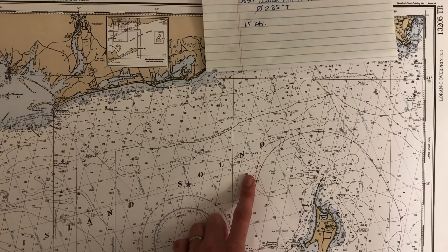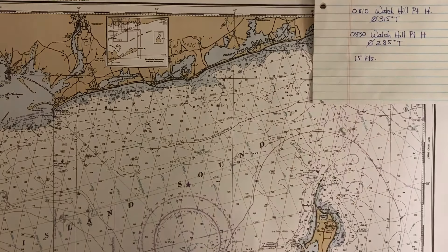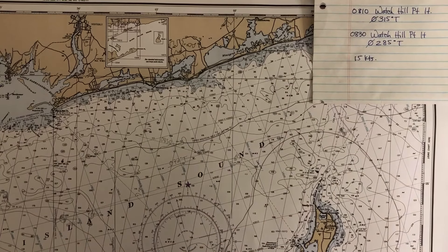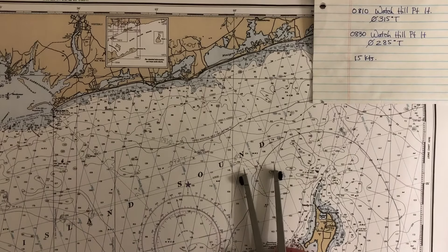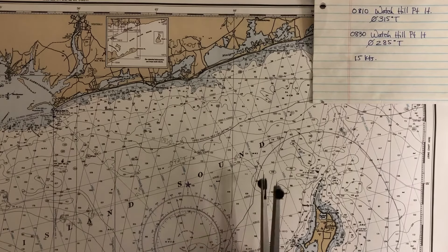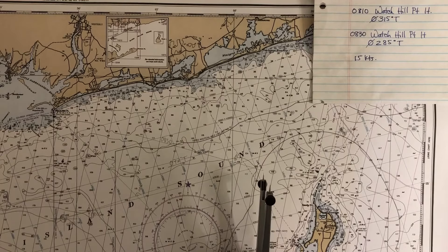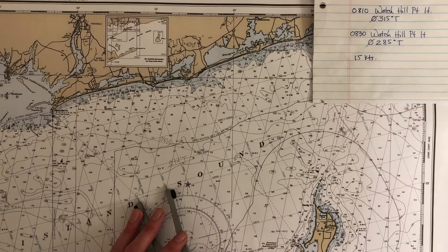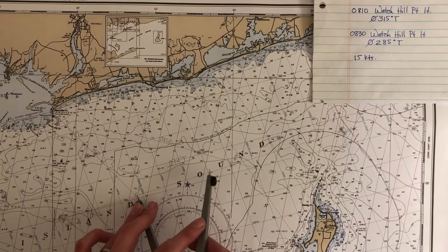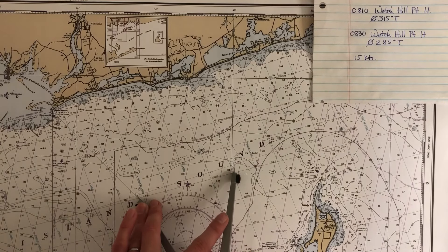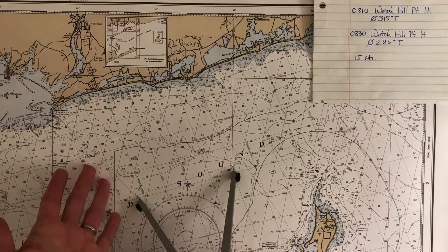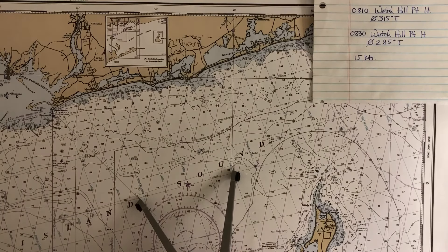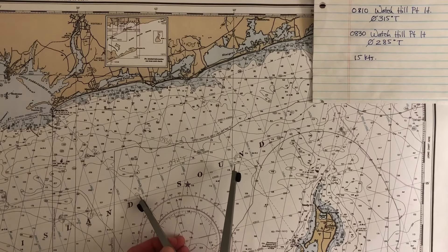Again it doesn't align with my line of position — my DR is just an estimate of where I am, while my line of position is where I actually am. I must be on that line. For this problem we're going to make a zero eight thirty running fix. I'm going to advance my zero eight ten LOP to zero eight thirty by calculating the distance traveled between eight ten and eight thirty at fifteen knots along my track line, which my DRs already represent.